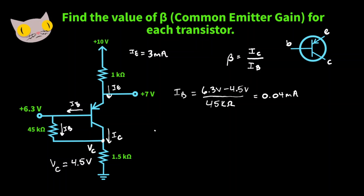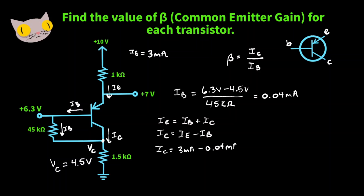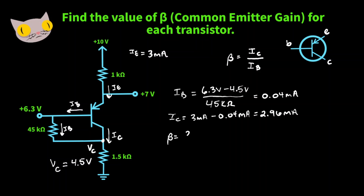Now for the collector current — remember the emitter current can be written as the base current plus the collector current. We have the emitter current value and the base current value, so we can find the collector current by rearranging the equation. I_C is going to be 3 milliamps minus 0.04 milliamps, giving us 2.96 milliamps. So now we can find the common emitter gain: that's 2.96 milliamps over 0.04 milliamps, giving us about 74. That's our common emitter gain.